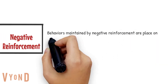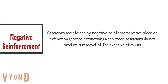The second type is extinction of behavior maintained by negative reinforcement, also called escape extinction. This is when those behaviors no longer produce the removal of the aversive stimuli — in other words, they cannot escape from that aversive situation. So if they're trying to get out of work or a non-preferred task, extinction would be not allowing them to escape or removing that stimuli.